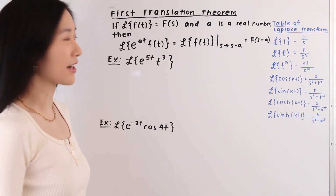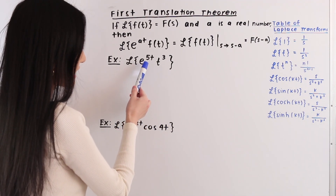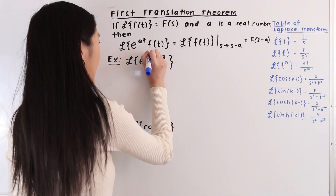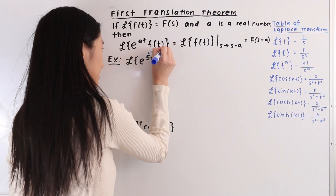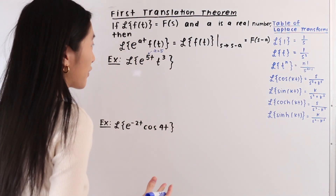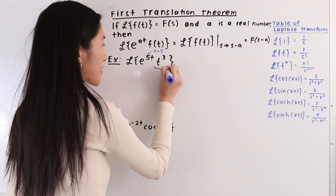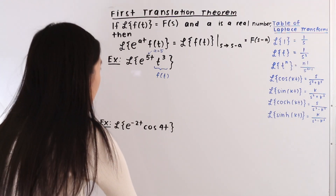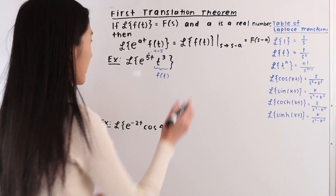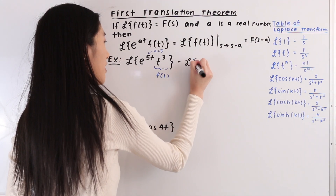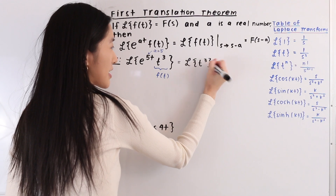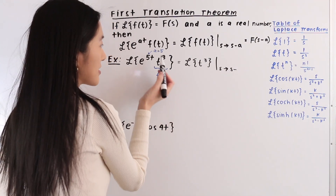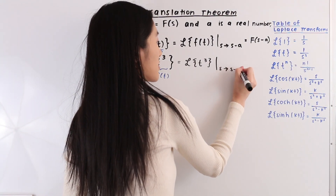In this first example we have the Laplace transform of e to the 5t times t to the third power. As our first step, let's identify what a is equal to — so a is equal to 5. Next, let's identify what f of t is equal to — so f of t is equal to t to the third power. We have the Laplace transform of t to the third power with a shift from s to s minus a, and since a equals 5, that is a shift from s to s minus 5.